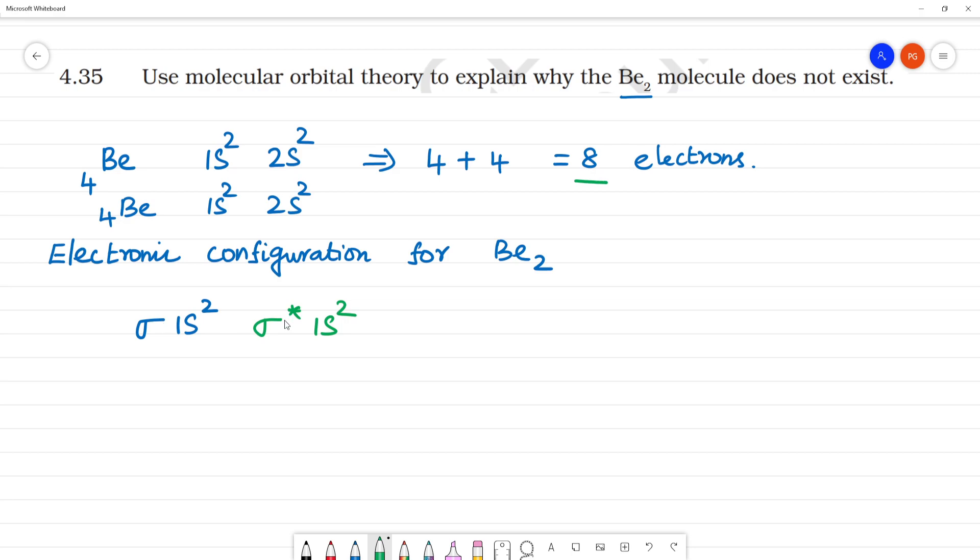What is sigma? What is sigma star? Sigma and the bonding orbitals. Sigma star antibonding orbitals. Antibonding will be having more energy than bonding.